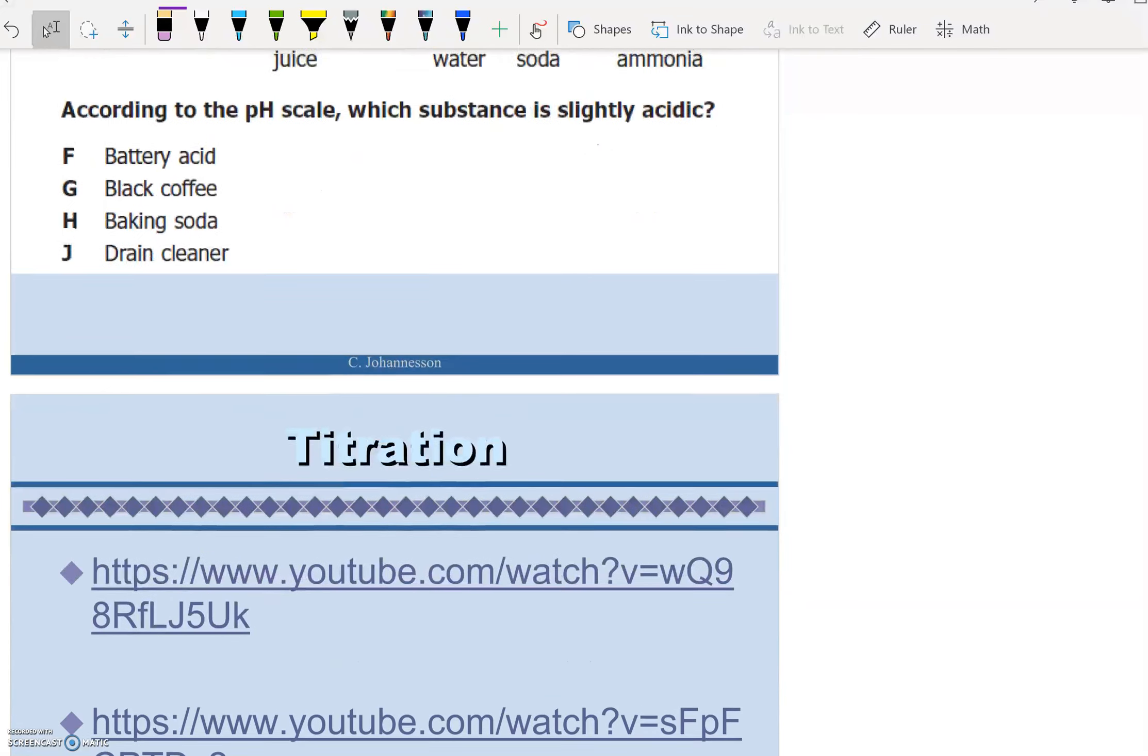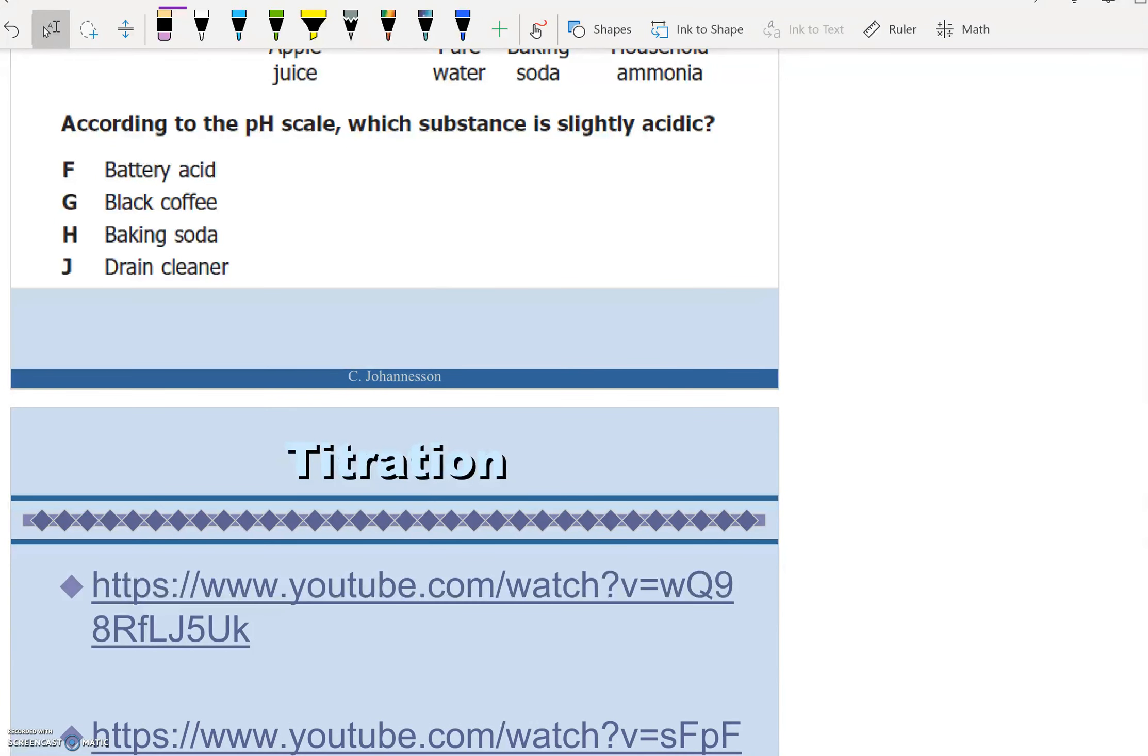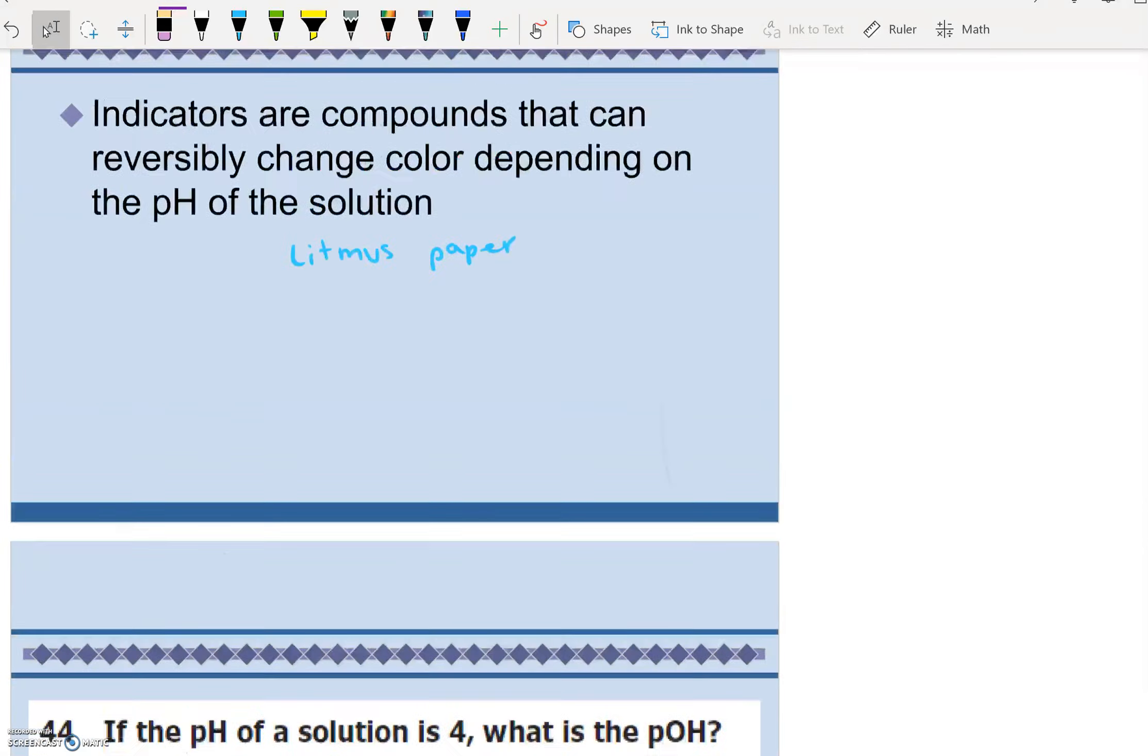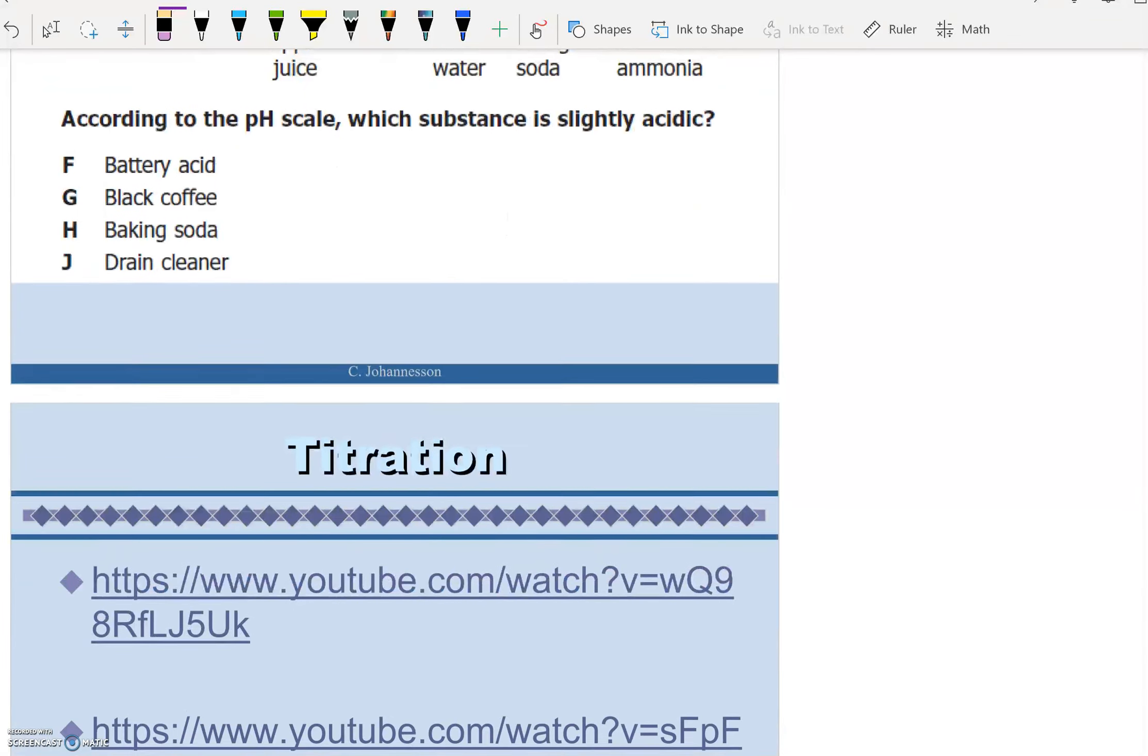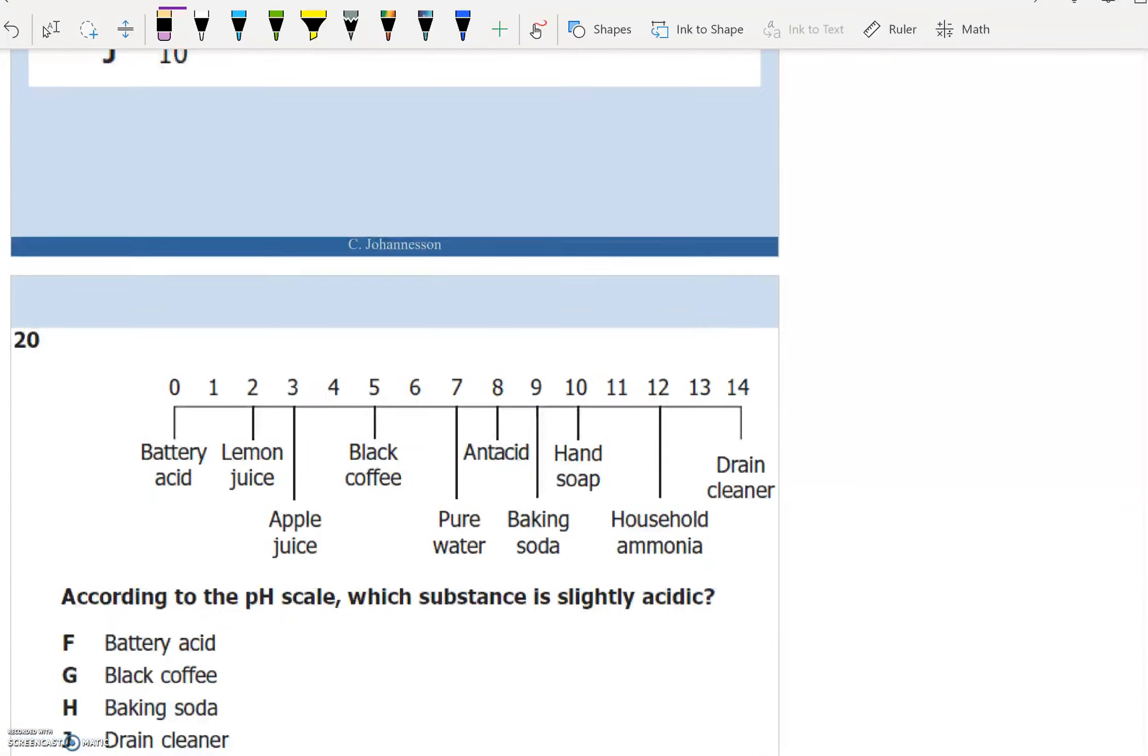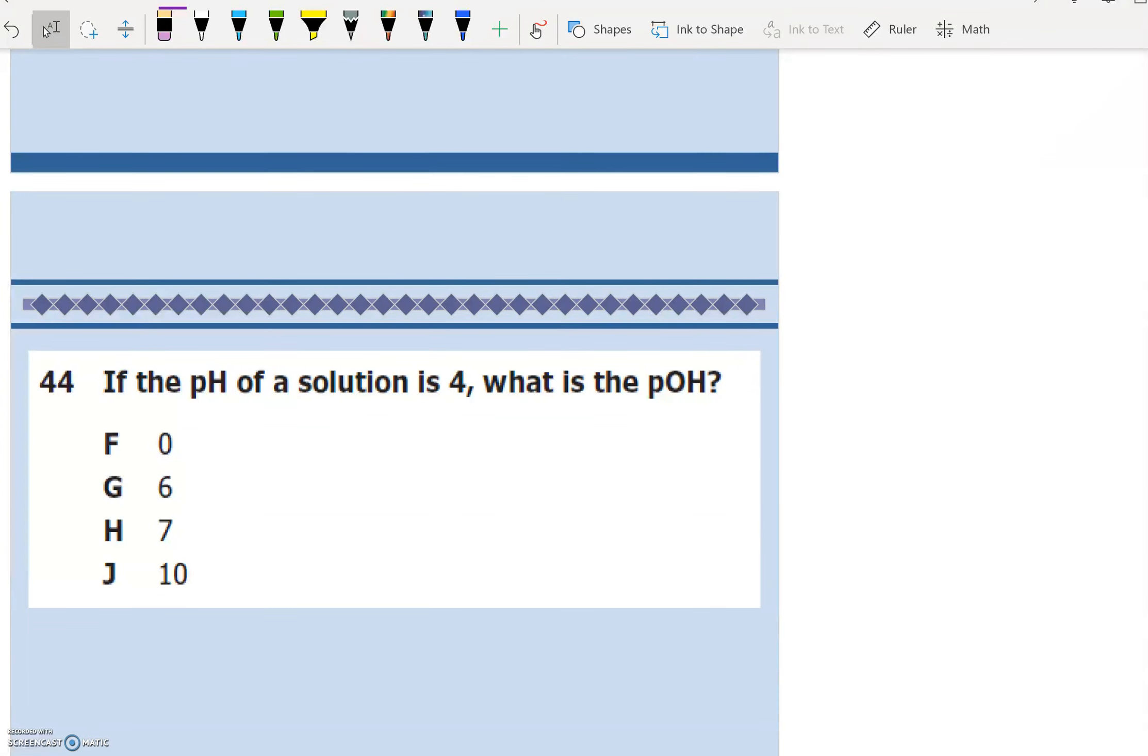So titrations are a way in chemistry that we can take something from being acidic and make it basic. And we can also calculate the concentration or the unknown concentration based upon that. So that would use your dilution formula, which you're going to learn about in a couple of days. So indicators change color depending upon pH. An indicator like phenolphthalein is used in a titration reaction. So that should get you to the bottom of page six.